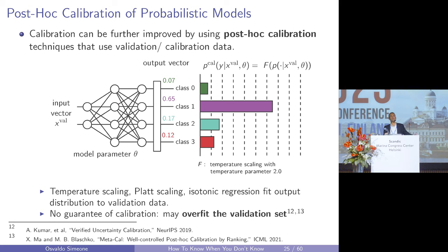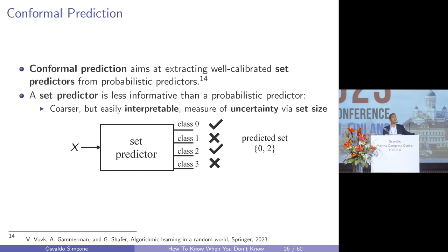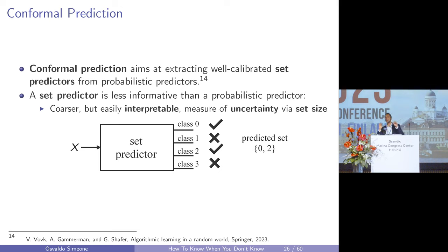I'd like to focus on a different class of post-hoc calibration techniques that is emerging in machine learning but has been well known in statistics for a while: conformal prediction. These are very interesting tools, simple to implement, and they provide strong theoretical guarantees of reliability. Conformal prediction takes a probabilistic predictor — which can be overconfident and poorly calibrated — and turns it into a well-calibrated set predictor. Rather than giving a probability for each output, it gives a set of plausible outputs.